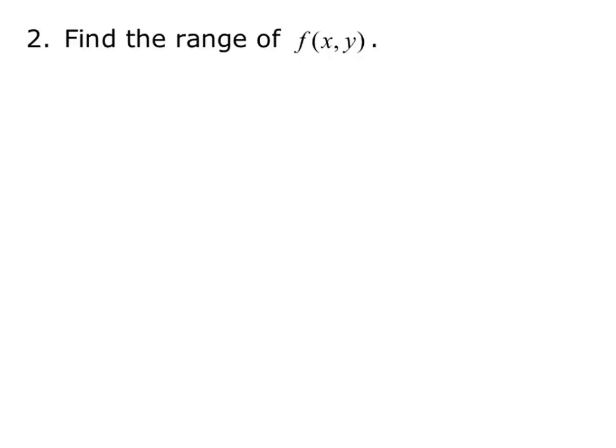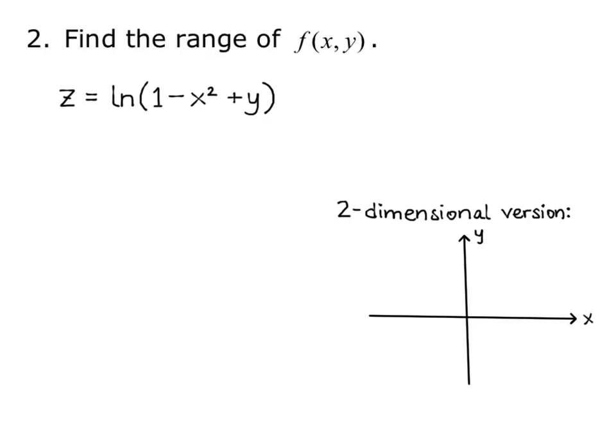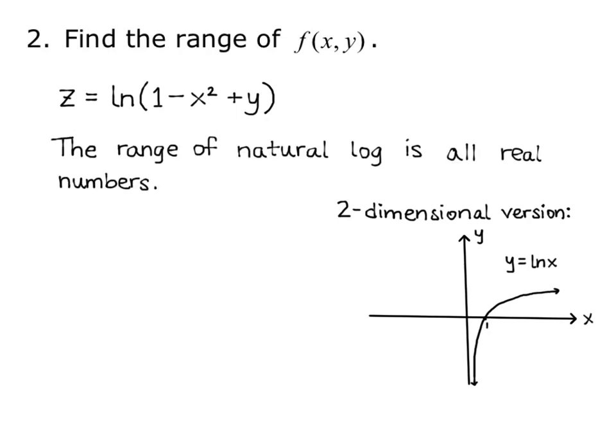Second, let's find the range of f of xy. Our function is z equals the natural log of 1 minus x squared plus y. Let's start with a two-dimensional version of a natural log. y equals the natural log of x. So here's our two-dimensional version.